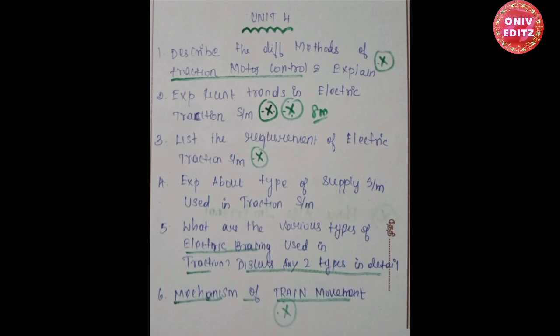Explain the types of supply system used in traction control. What are the various types of electric braking used in traction control? Discuss any two types. Explain the mechanics of train movement.